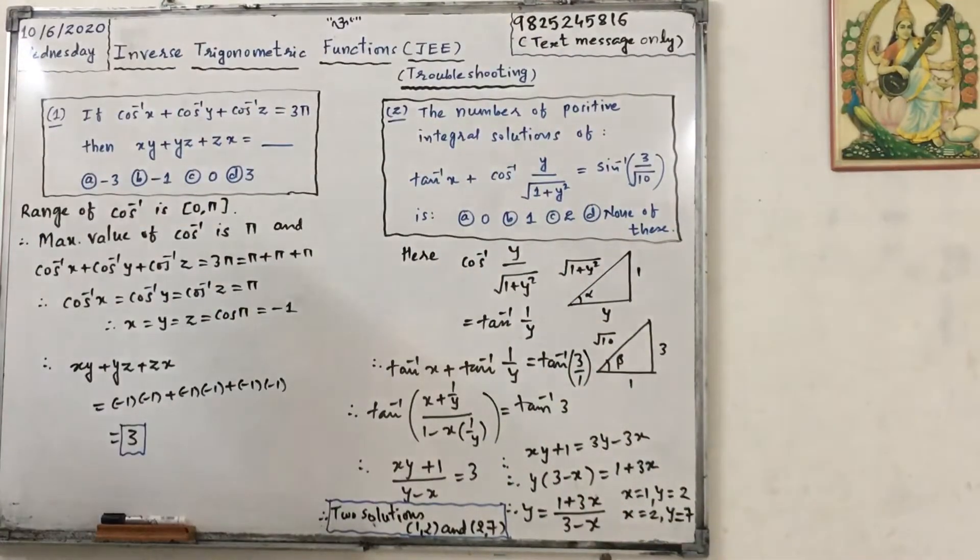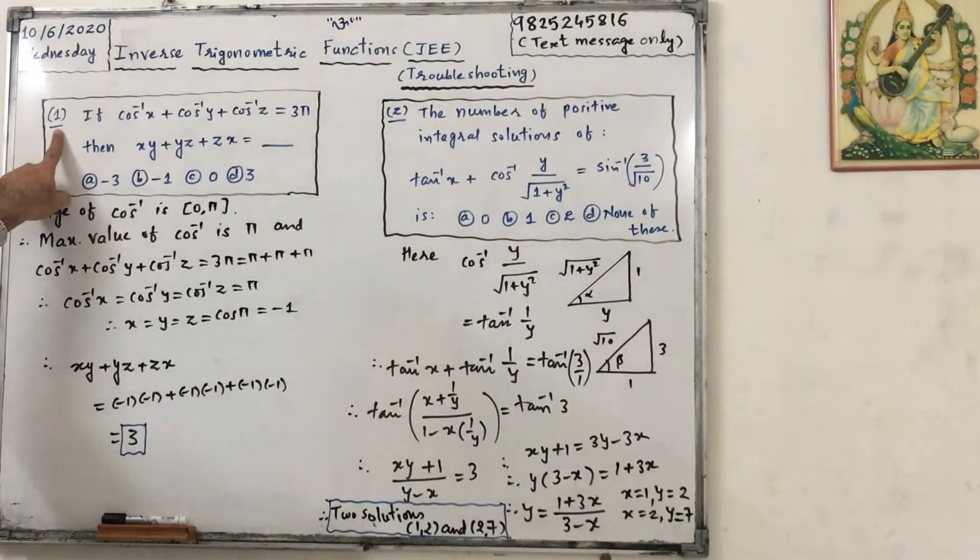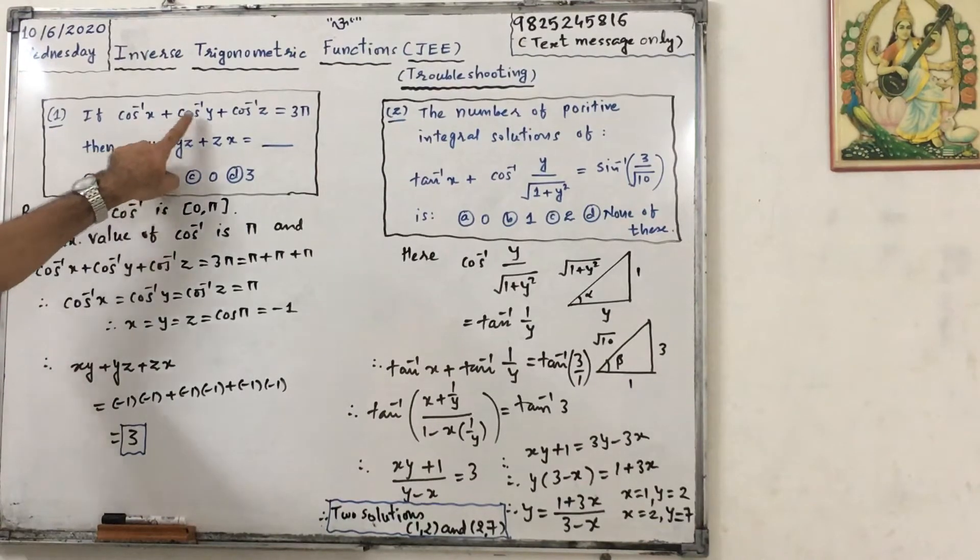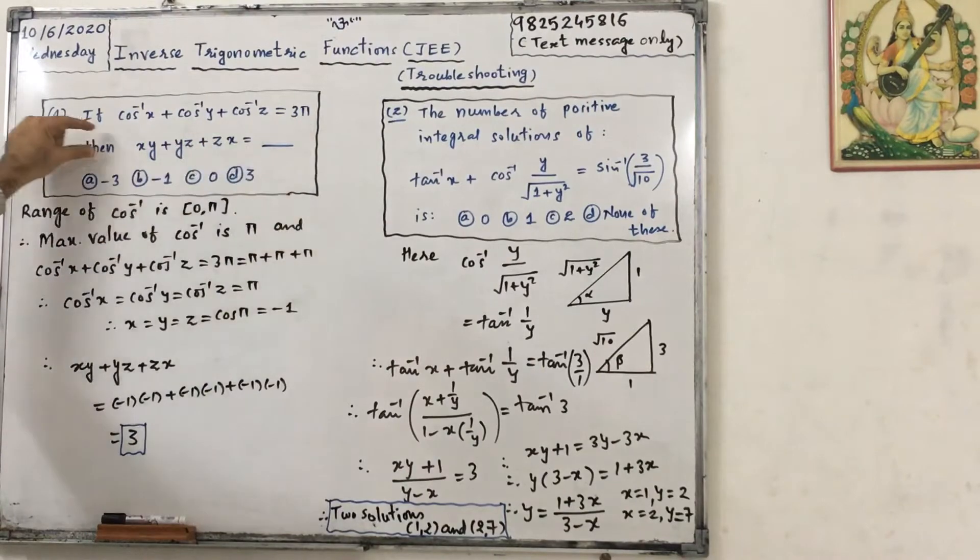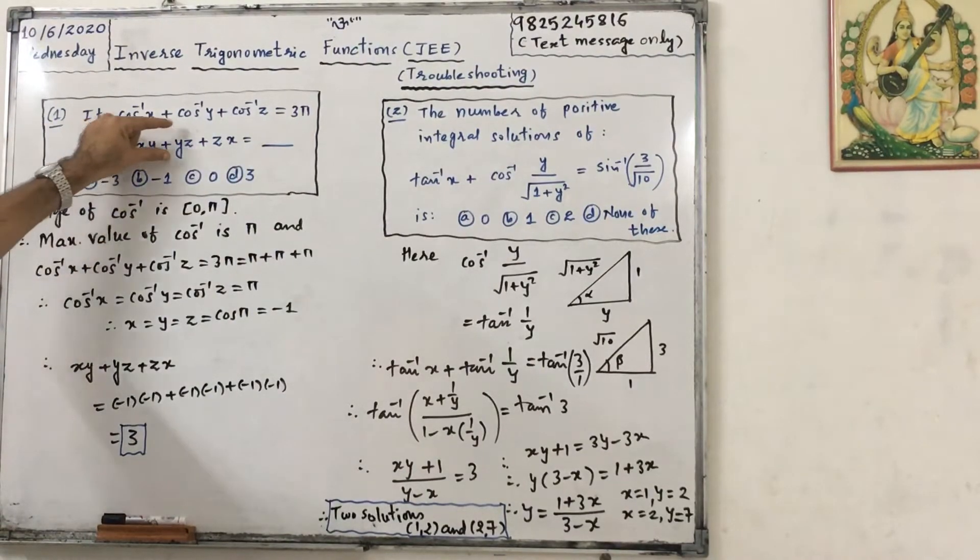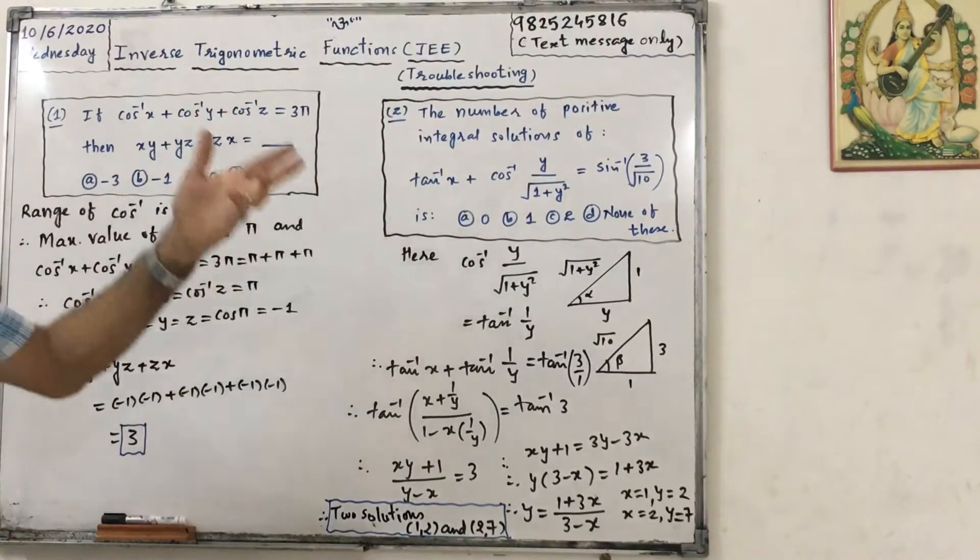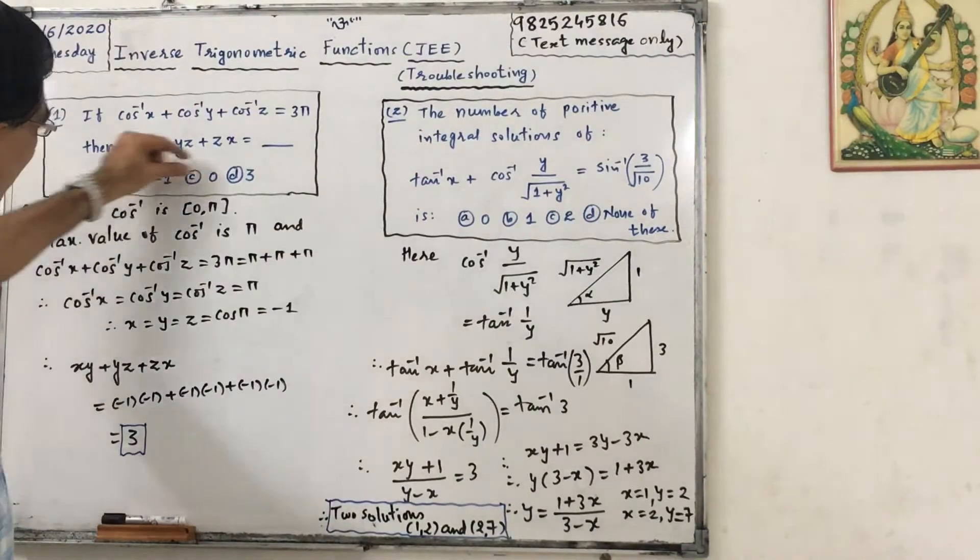So first, if cos inverse x plus cos inverse y plus cos inverse z equals to 3 pi, then value of xy plus yz plus zx equals to what? We are given choices.